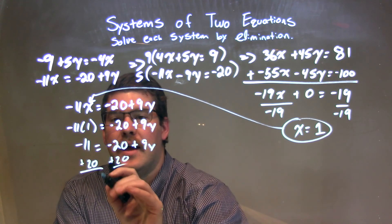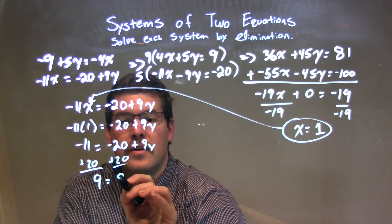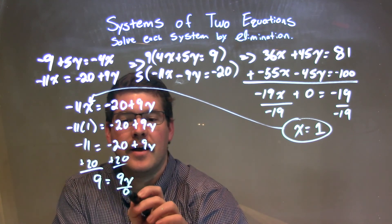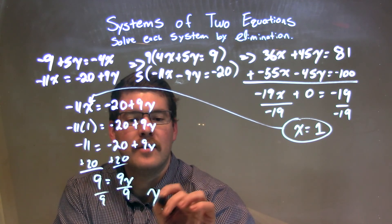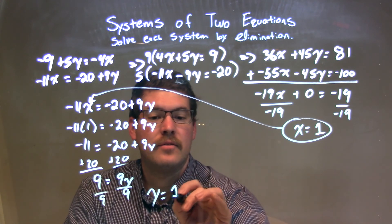That leaves me with positive 9 equals 9y. I'm going to divide by 9 on both sides, and y is just equal to 9 divided by 9, which is 1.